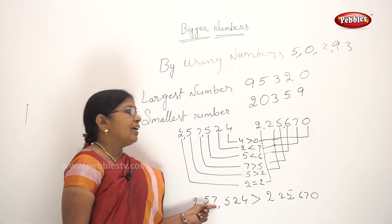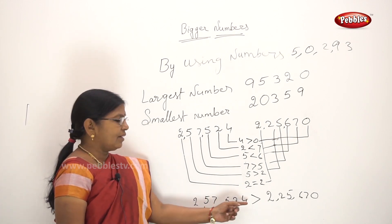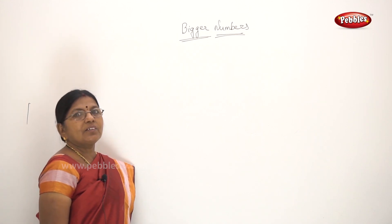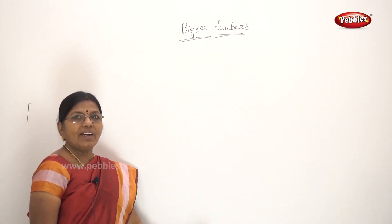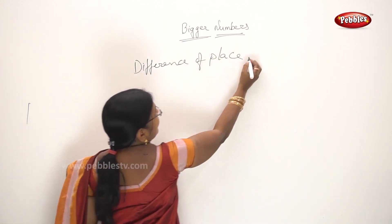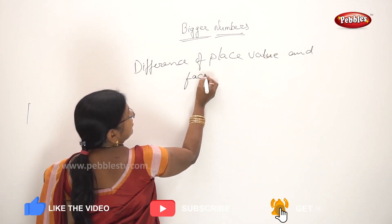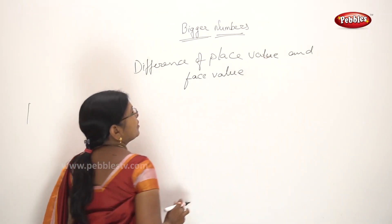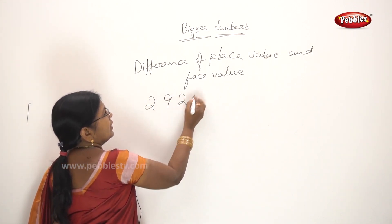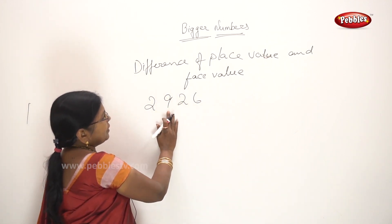So 2,057,524 is greater than 2,25,670. The ten-thousands place decides: 57,000 is greater than 25,000, so this number is bigger and the other number is smaller. Now let us talk about the difference between face value and place value.